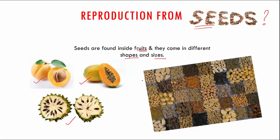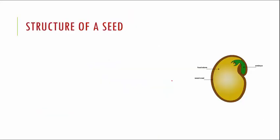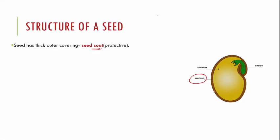Now let us look at the structure of a seed. If you look at a seed of bean or gram, they are quite hard. But if you soak them in water overnight, they become soft, moist, and swell up — this is because seeds absorb water. Looking at the structure, the outermost covering is called the seed coat. This brown covering is a protective layer that protects the seed from any damage.